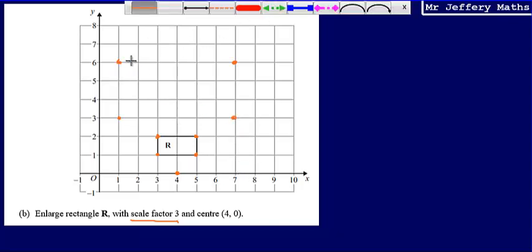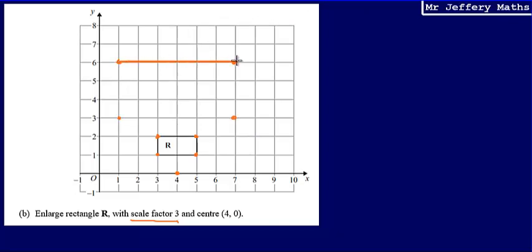So my final answer for question 10b is going to be an enlargement of the shape R by scale factor 3. It will look like that, and it needs to be in that exact place on the diagram. Thank you.